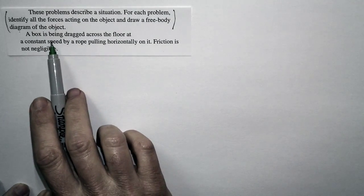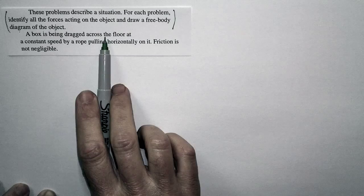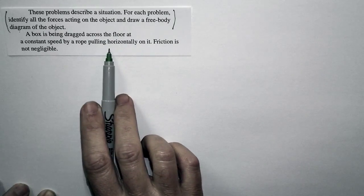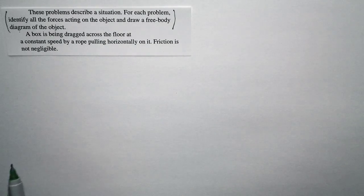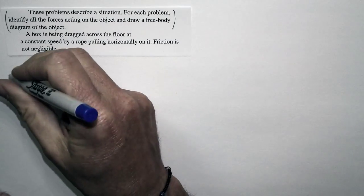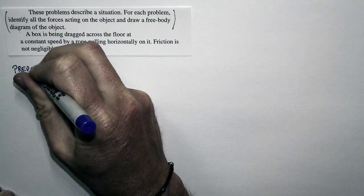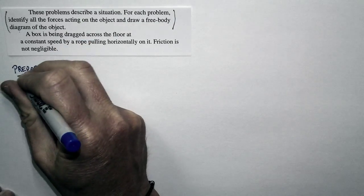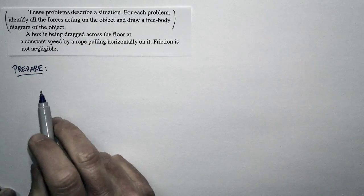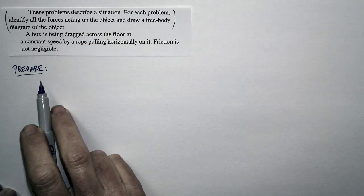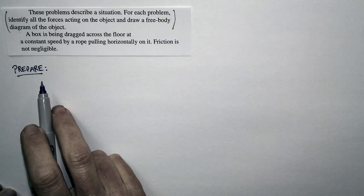In this particular case, we're looking at the following. A box is being dragged across the floor at a constant speed by a rope pulling horizontally on it. Friction is not negligible. So we're going to do the force identification, and then we're going to draw a free body diagram. And that is going to be the preparation for quantitative problems that you'll see in chapter five.